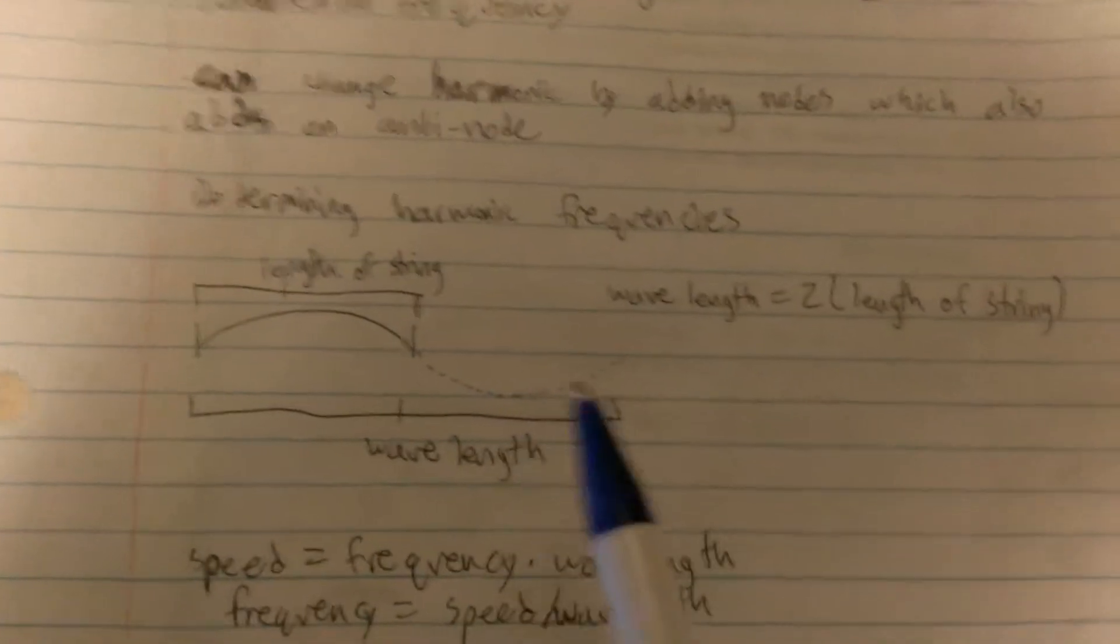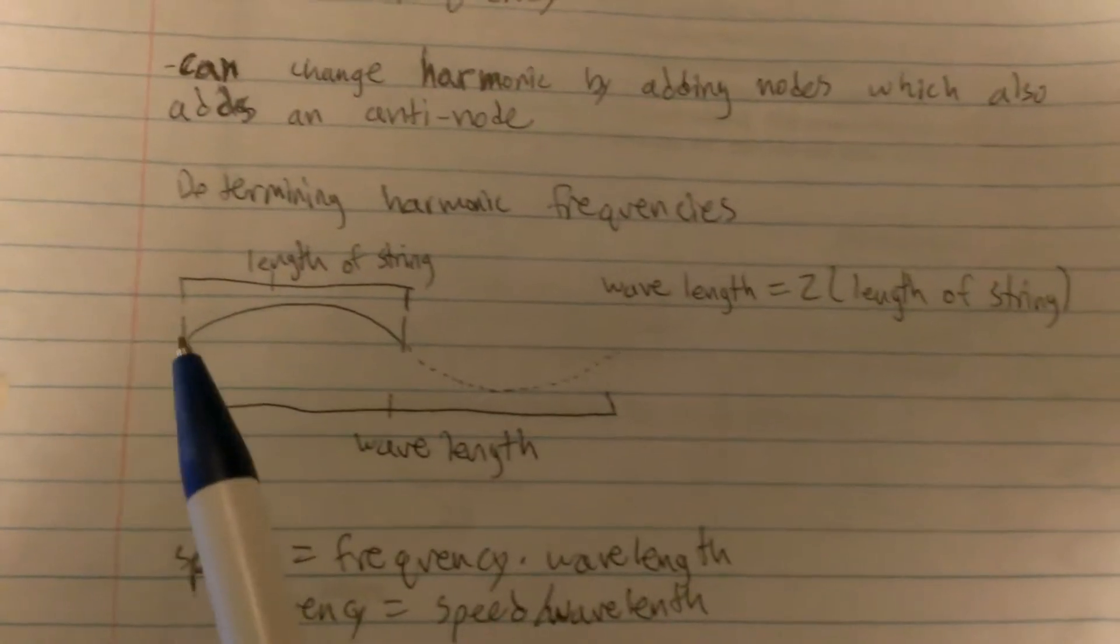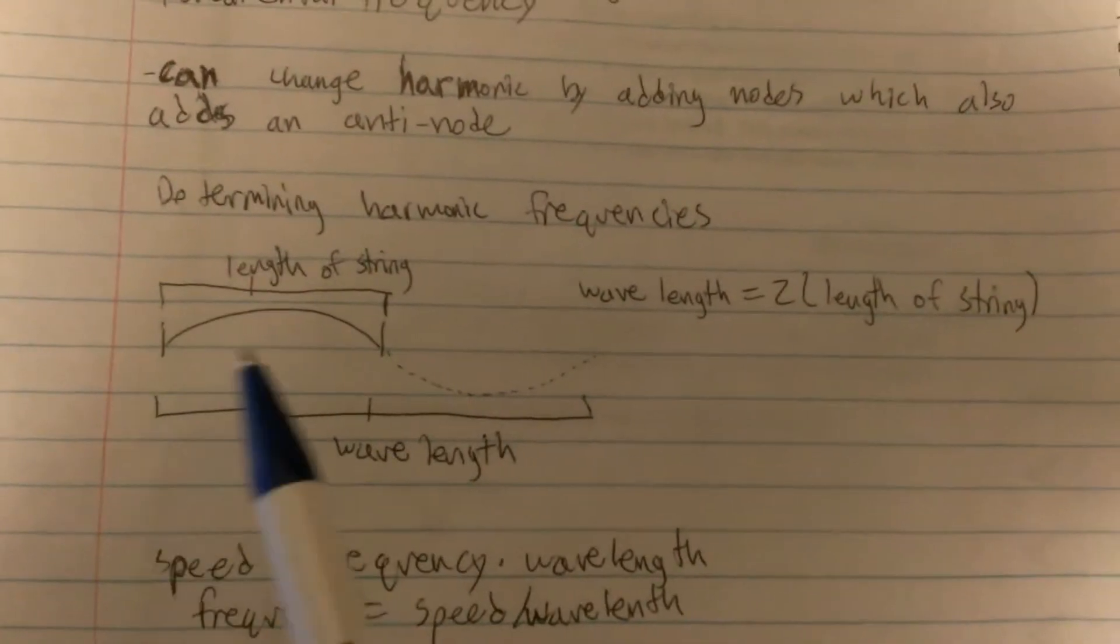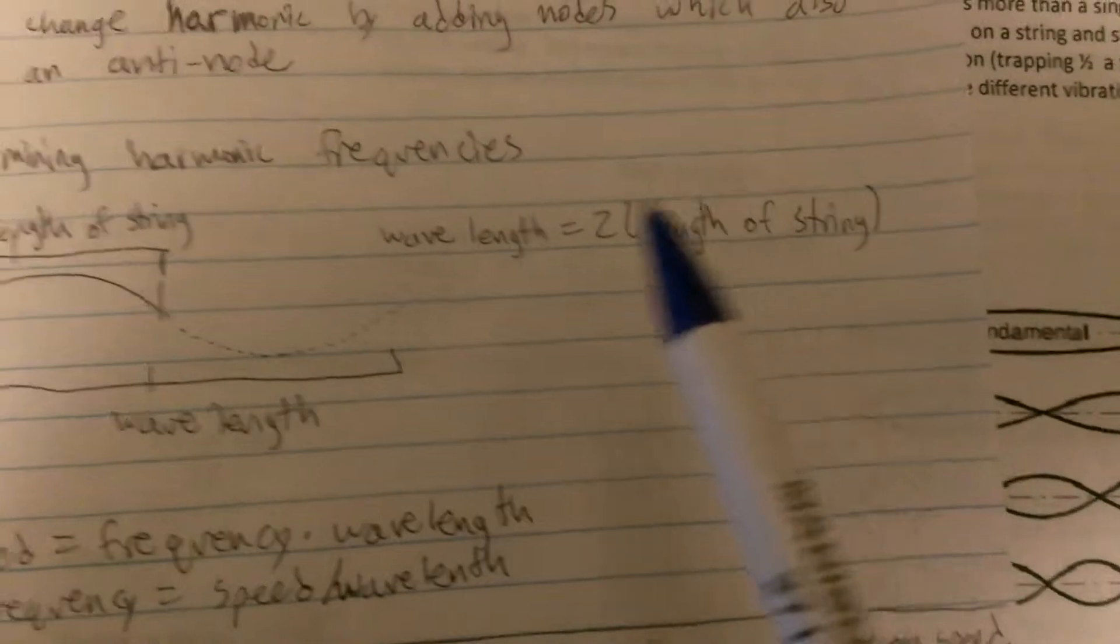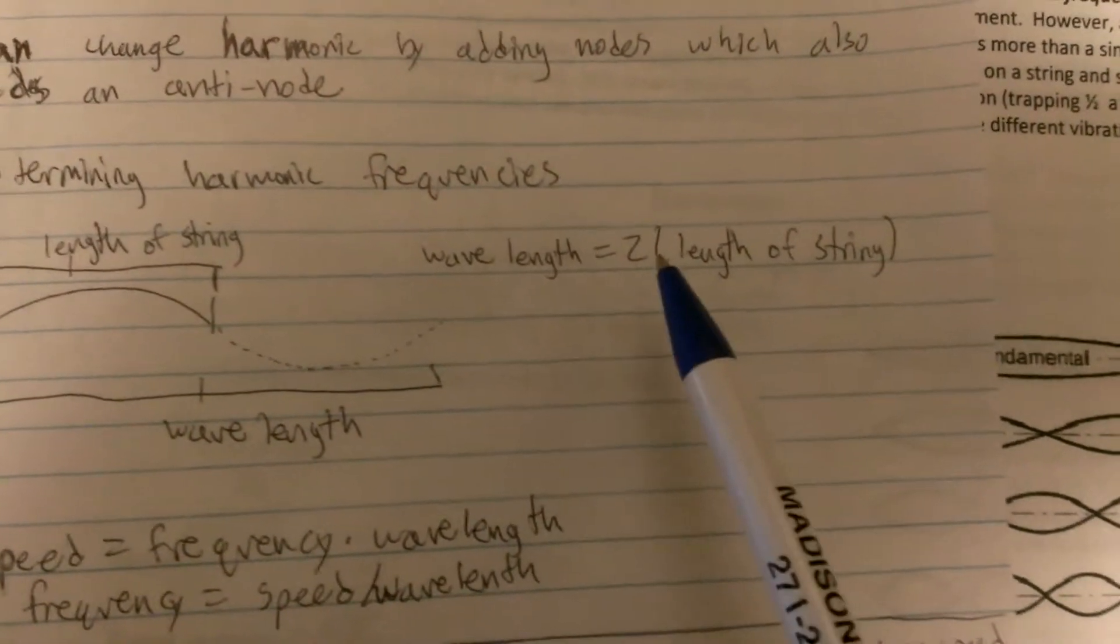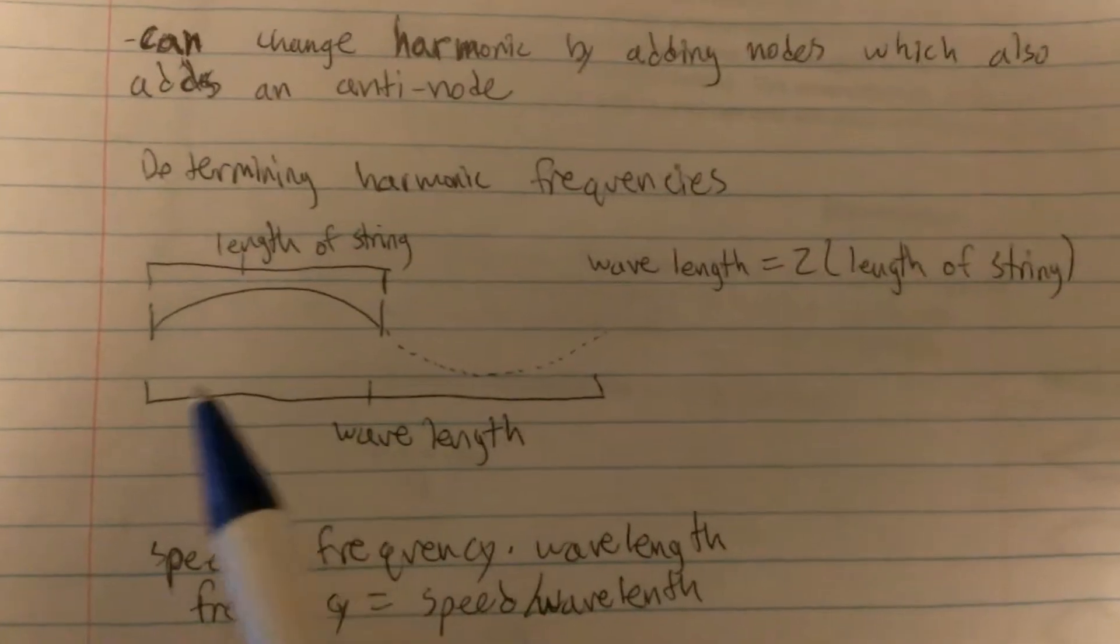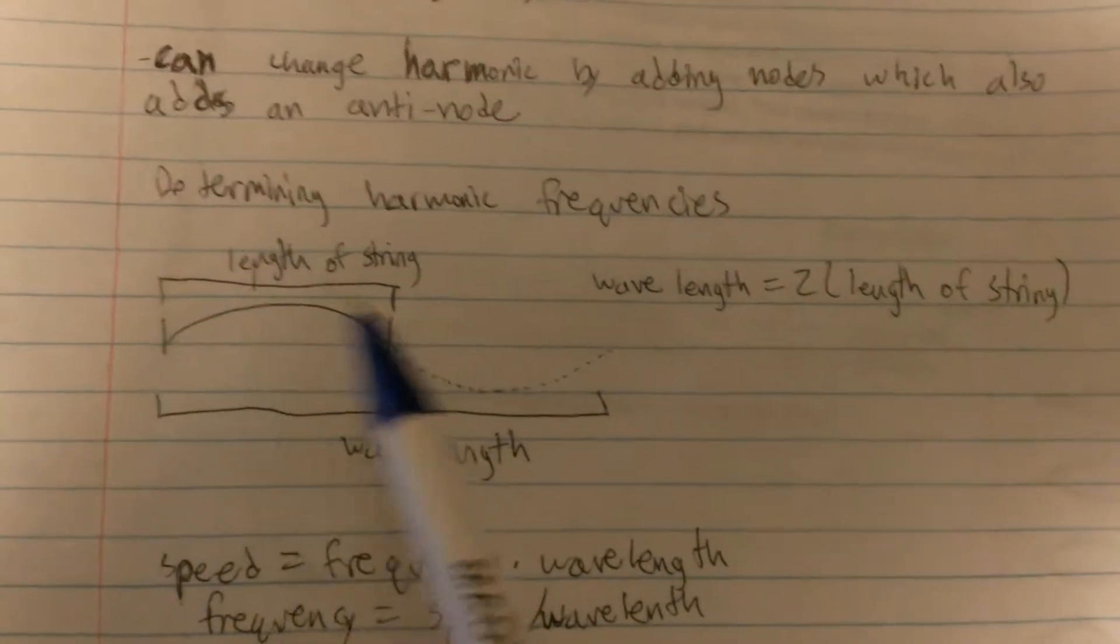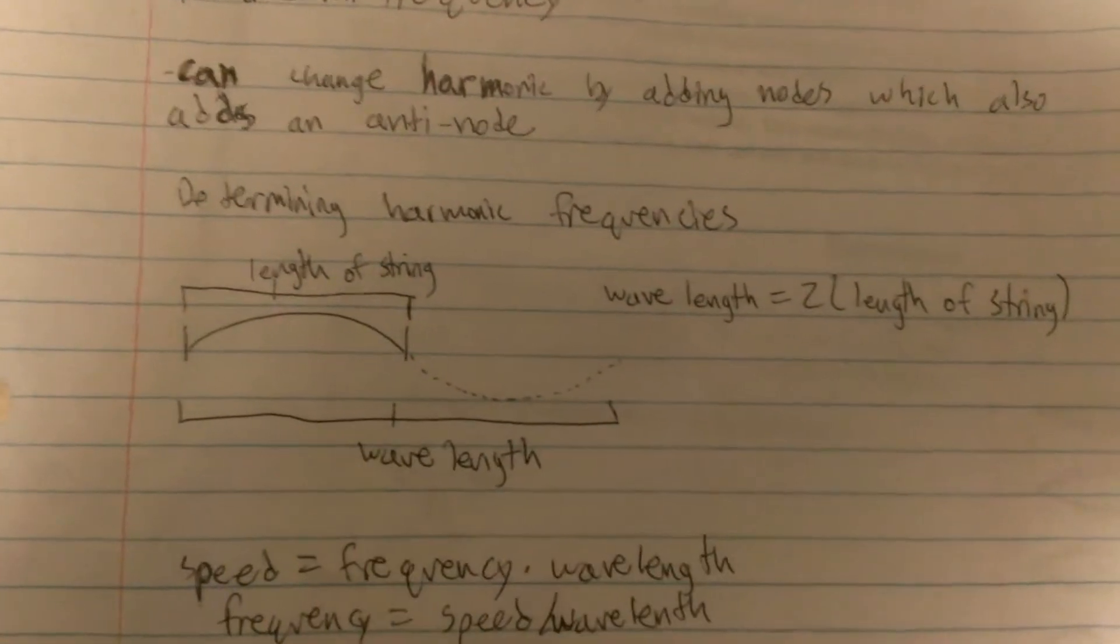To determine a harmonic frequency, first you have to look at the length of your string, which is right here. And you have to know that your wavelength is equal to two times the length of the string, if you're thinking about it like a guitar. So, here's your length of the string, and it's doubled for your wavelength.